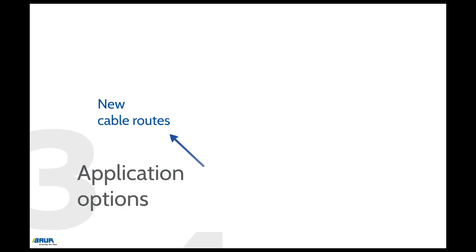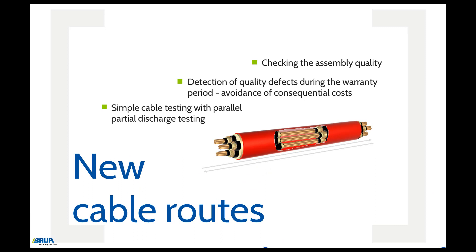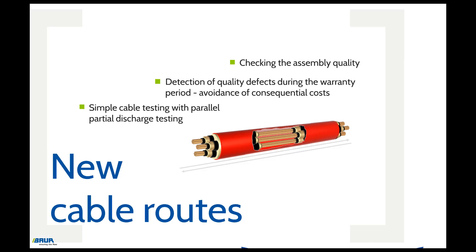Cable testing and diagnostics are used both on new cable routes before commissioning and on worn cables. Before the commissioning of new cable routes, testing and diagnostics are mainly used to check the assembly quality. Quality defects can be detected on time, thereby avoiding high consequential costs. In addition, newly laid cables are tested for safety-related defects by a simple cable test along with partial discharge testing.